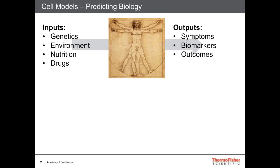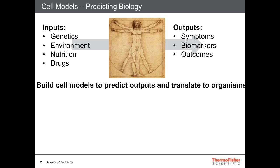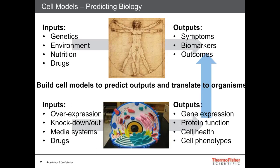There are a number of inputs that are variables: our genetics, our environment, our nutrition, and various drugs we may use to treat disease, that impact a number of outputs we can elucidate as symptoms and biomarkers measured through instrumentation. Outcomes may include loss of mobility or function, or even loss of life. We'd like to try to understand this through a model in our discovery processes where we would build a model to predict these outputs and translate them to organisms.